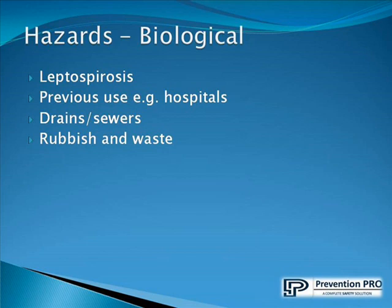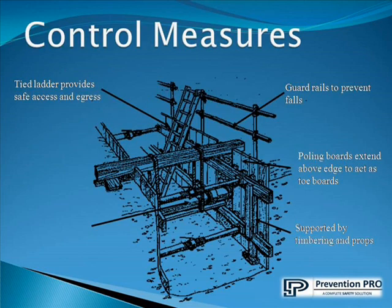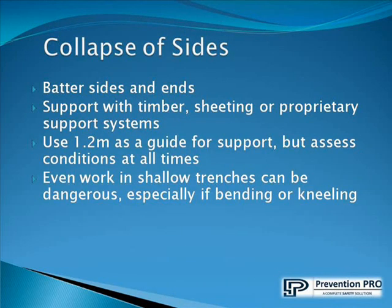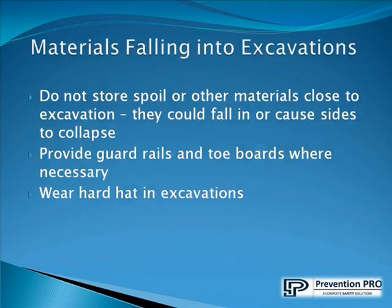Control measures: a safe ladder provides safe access and egress. Guardrails prevent falls; toe boards extend above the edge to act as toe boards. Sides should be supported by timbering and props to avoid collapse. Batter sides and provide dense support with timber sheeting or proprietary support systems. Use 1.2 meters as a guide for support but assess conditions at all times — even work in shallow trenches can be dangerous, especially if bending or kneeling.